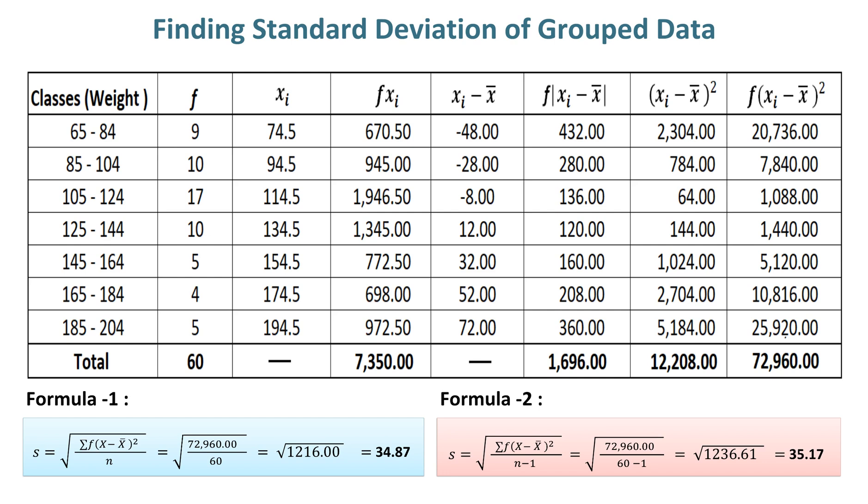When we subtract 1 from sample size in Formula 2, then the value of standard deviation becomes slightly higher compared to Formula 1, which is 35.17.